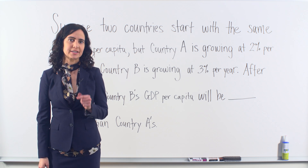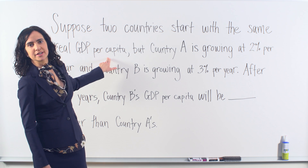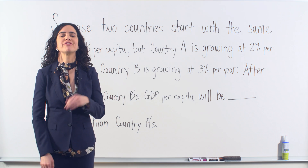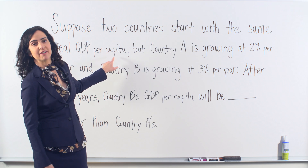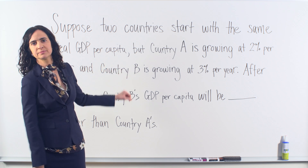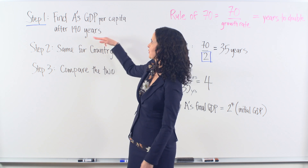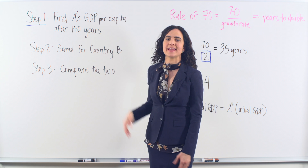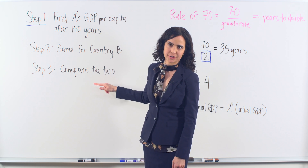The real trick here is to realize that we don't actually need to know the initial value. This number could be 2,000 or it could be 5 billion — no big deal. As long as these two countries have the same initial starting value, we're fine. We can solve this in three steps: first, find country A's GDP per capita after 140 years; next, do the exact same thing for country B; and finally, compare the two.